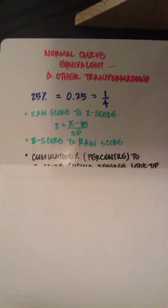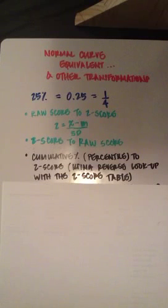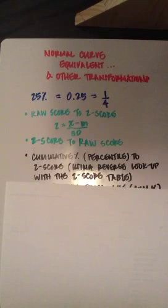You can also transform a cumulative percent or percentile to a z-score. We do this using the z-score table from last week. Last week we had a z-score and used it to find a percent of an area between that score and the mean or that score and the tail of the distribution. You can use that lookup table in reverse to actually find a z-score using a percentile or cumulative percent.